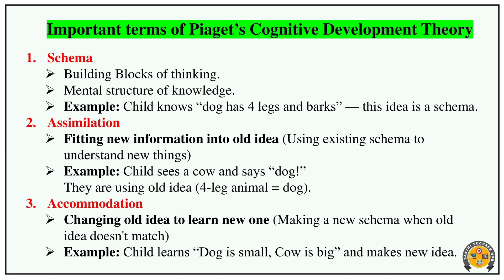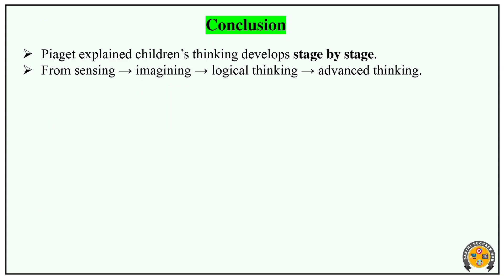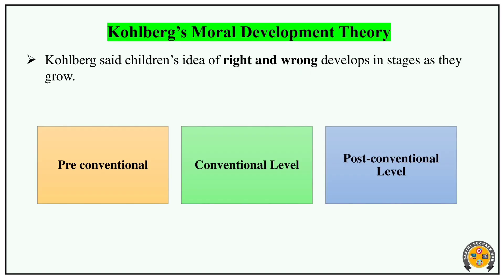This is Piaget's Cognitive Development Theory. Then, Kohlberg's Moral Development Theory — simple. What is right, what is wrong, what is good, what is bad. How does this develop through stages? There are three levels, each with two stages.